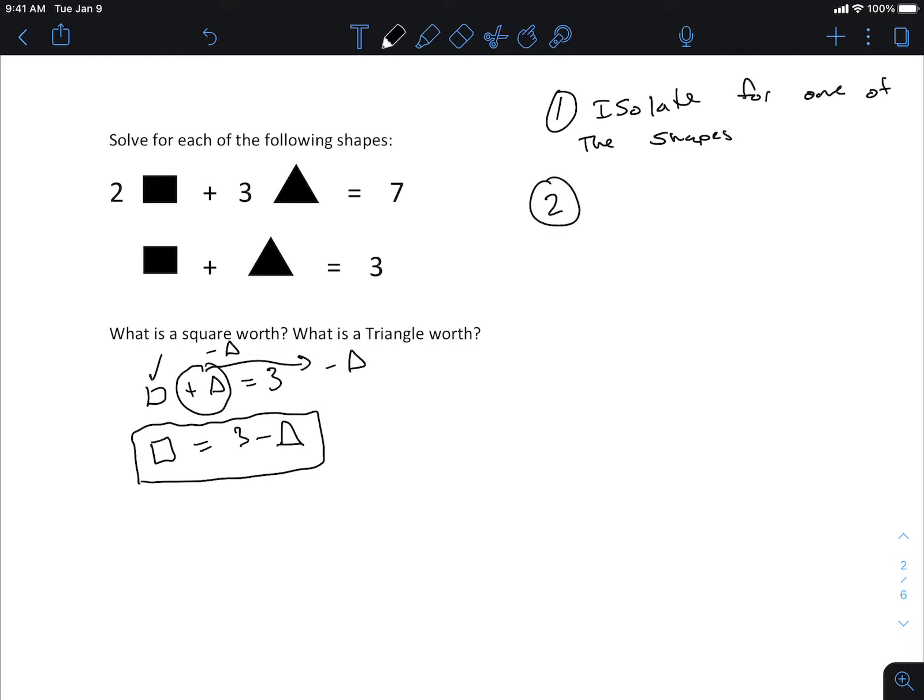Step 2, now that you have one of these things written all by themselves, you can substitute back into the opposite equation. So by that I mean, I have a square sitting here, I've isolated it, right? What I want to do is find where there is a square. What I want to do is find, or we're going to use this word substitute again, find where the square is in the other equation.